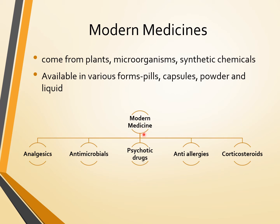Modern medicines have five classes: analgesics, antimicrobials, psychotic drugs, anti-allergies, and corticosteroids. You have to know those five classes of modern medicines.